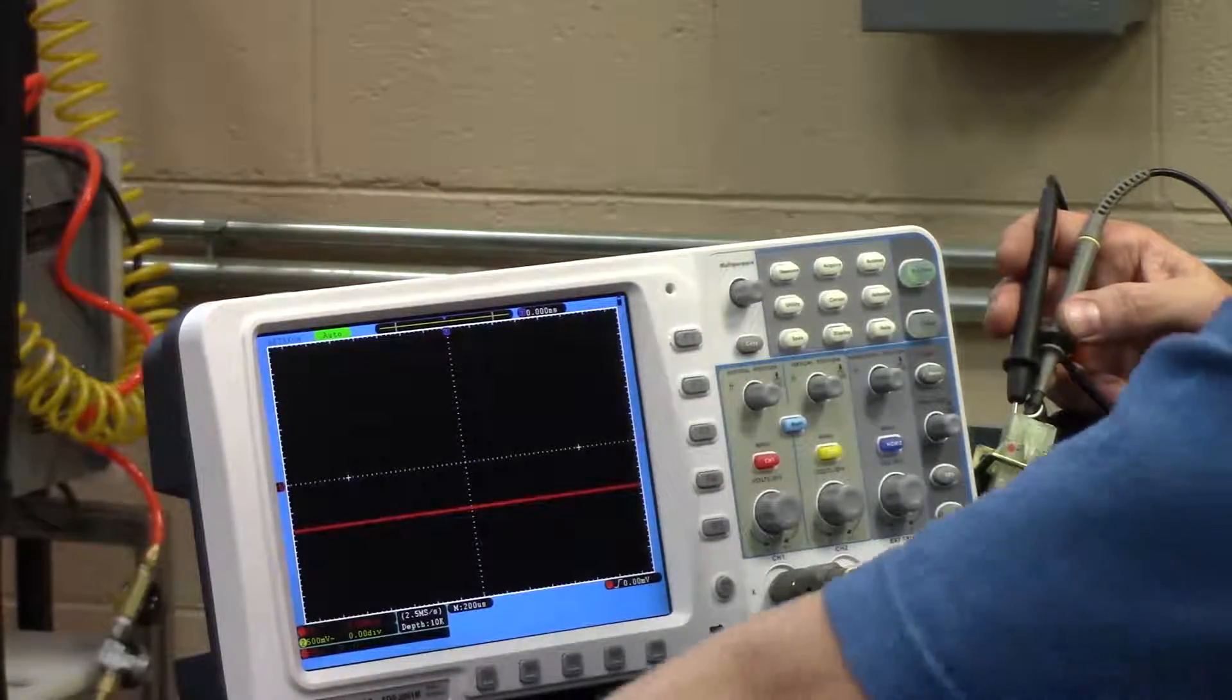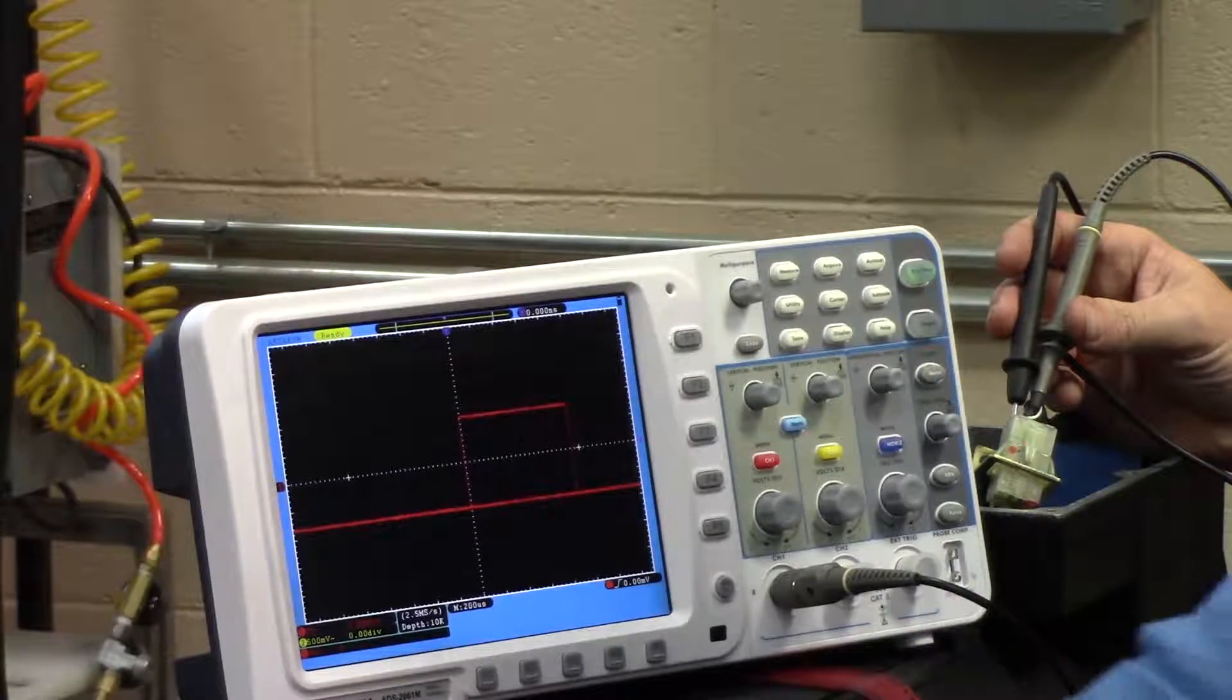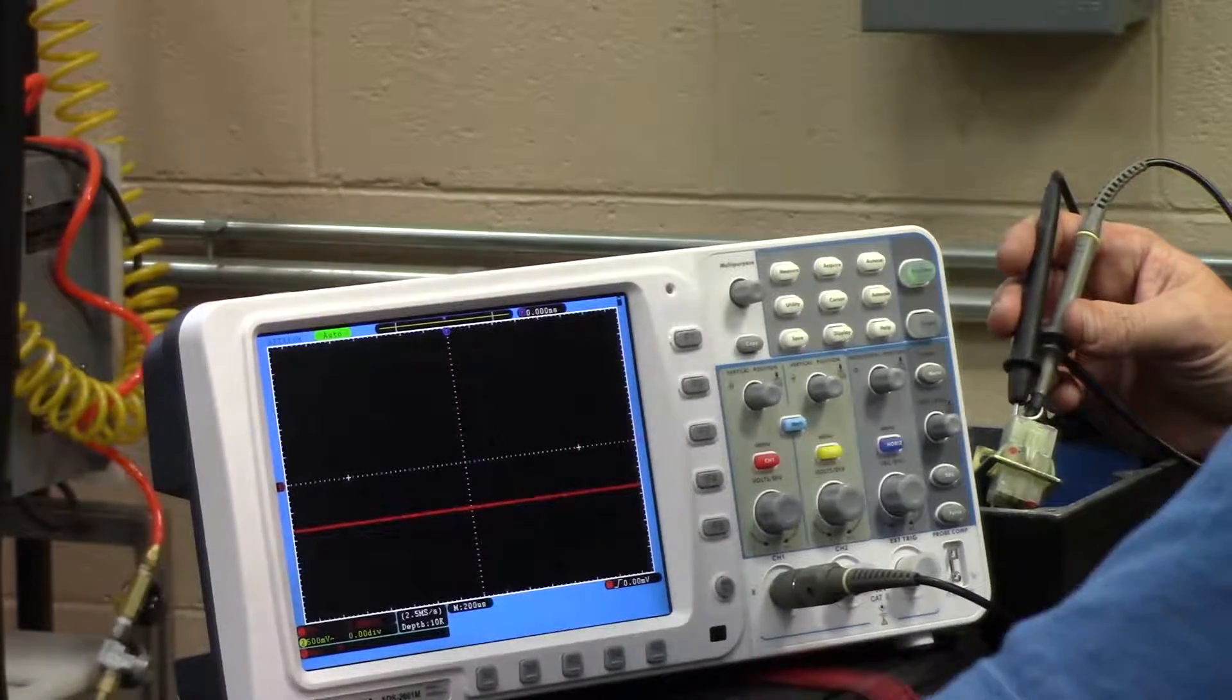Have the person spin it again. And now we know we have both Z and Z-not signals.